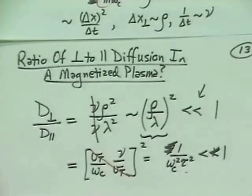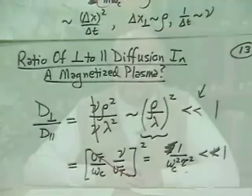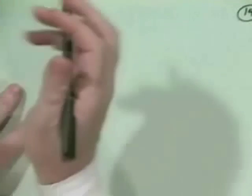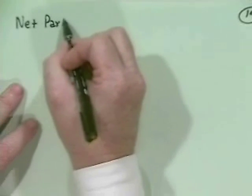The next question is: given all this diffusion, if we have a slab or cylinder of plasma, how long will the plasma persist? We need to find the net particle confinement time. On the perpendicular side there's also the ambipolar diffusion argument to make, but we won't go through all those details. I want to ask: if we stick a chunk of plasma in a cylinder or slab, how long will it stick around, and how fast will it decay?